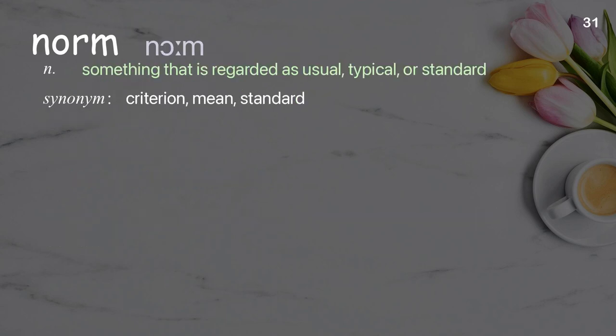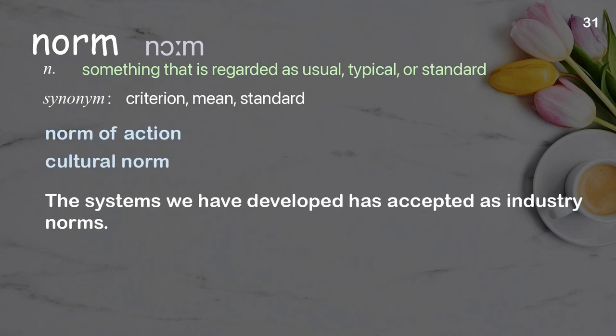Norm: Something that is regarded as usual, typical, or standard. Examples: Norm of action, cultural norm. The systems we have developed have been accepted as industry norms.